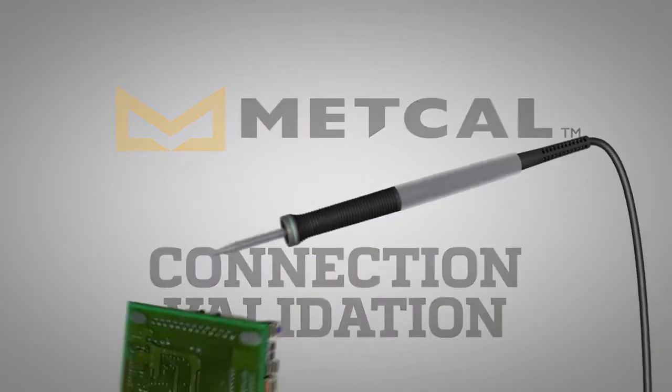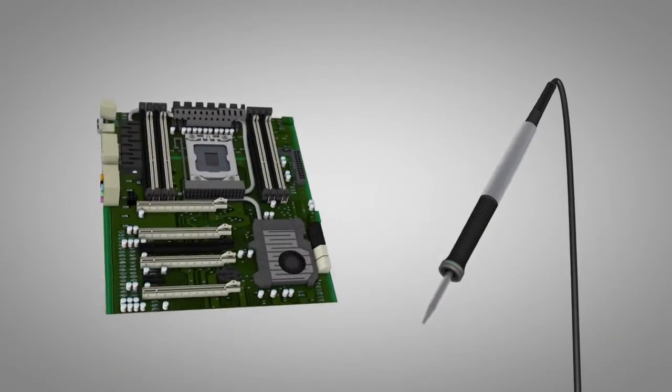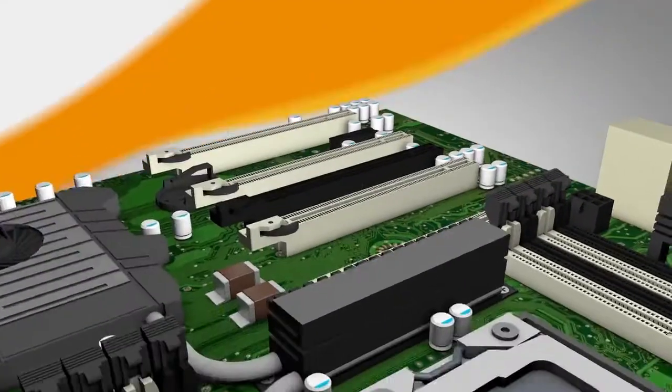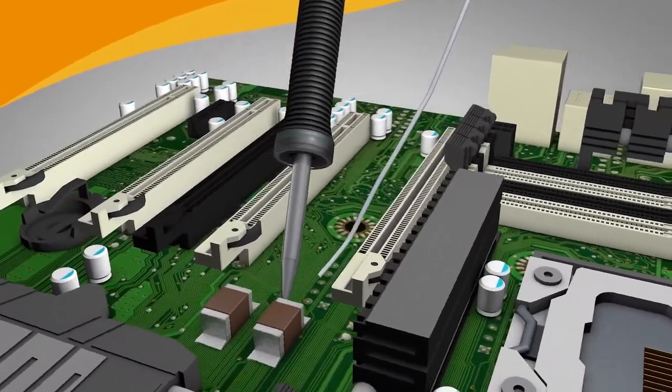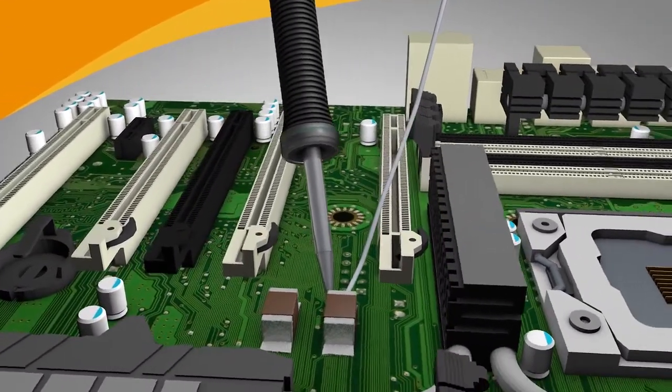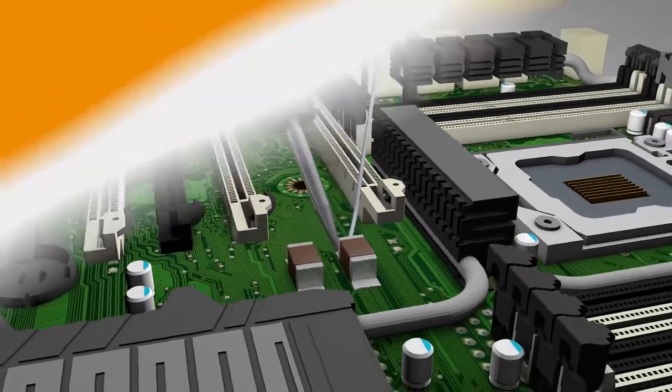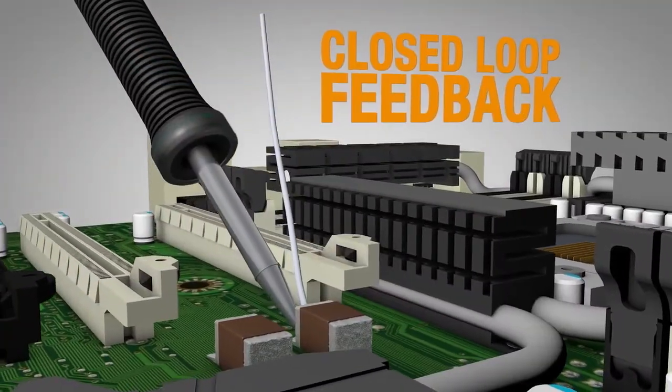The intermetallic compound thickness is critical in the formation of a solder joint. Connection Validation evaluates the quality of the solder joint by calculating the intermetallic compound formation and providing closed-loop feedback to the operator.